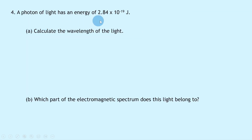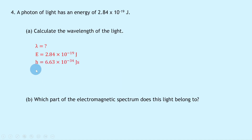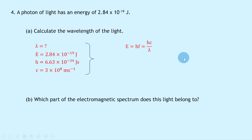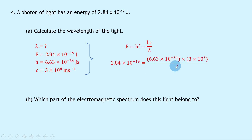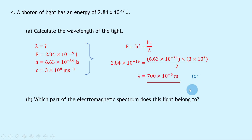Question 4 says a photon of light has an energy of 2.84 × 10⁻¹⁹ joules. Part a says to calculate the wavelength of the light. We know E = 2.84 × 10⁻¹⁹ J, h = 6.63 × 10⁻³⁴ J·s, and c = 3 × 10⁸ m/s. Using E = hc/λ, substituting gives 2.84 × 10⁻¹⁹ = (6.63 × 10⁻³⁴ × 3 × 10⁸) / λ. Rearranging for λ gives λ = 700 × 10⁻⁹ m, which is 700 nanometres.